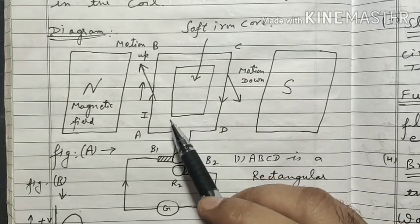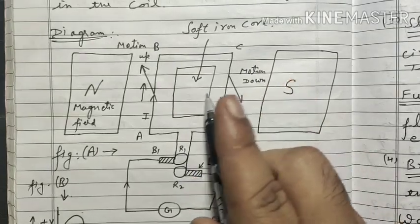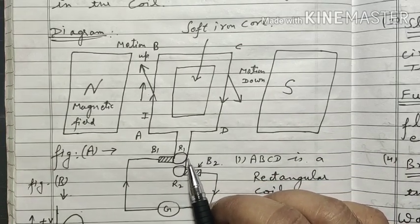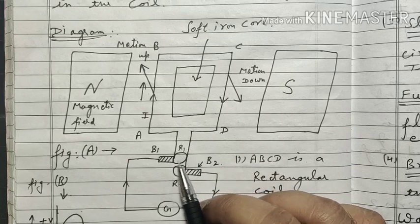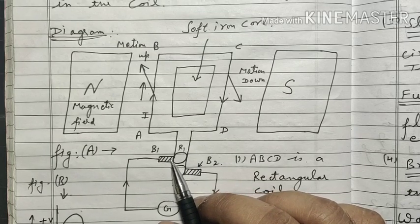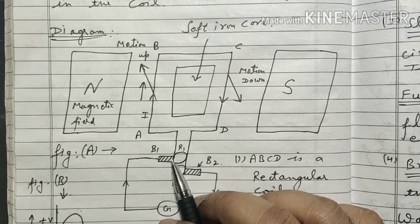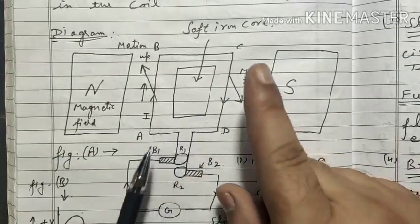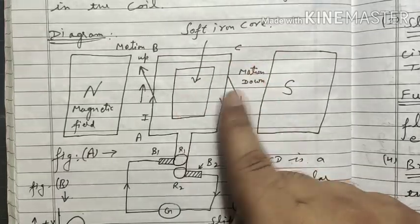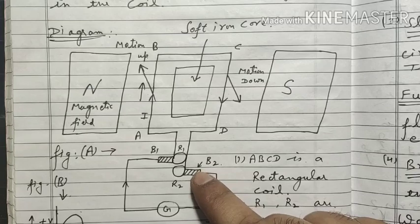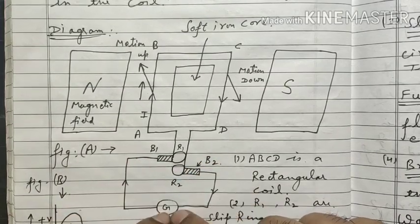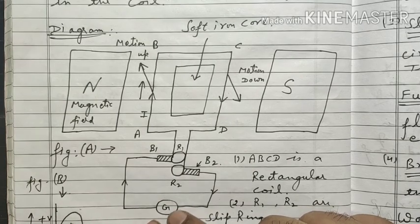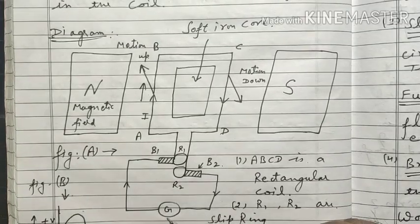When the coil ABCD rotates in circular form, the slip rings also rotate along with it. As they rotate, they continuously maintain contact with the brushes. The faster the coil rotates inside the magnet, the greater the induced EMF and voltage created. If the induced EMF or current increases, the galvanometer gives a deflection, confirming that electric current is being produced. Even a small electric current can be detected by the galvanometer.